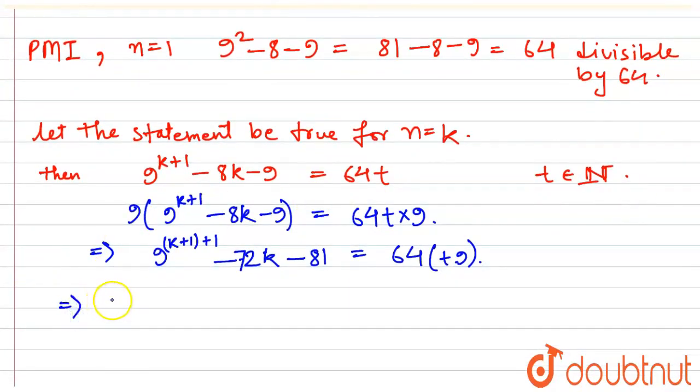Now, we need to break it in a specific way. So for that, we will be breaking up 72k as -8k and -64k. And we would be breaking up 81 as -8, then -9 and then -64. That is equal to 64 × 9t.